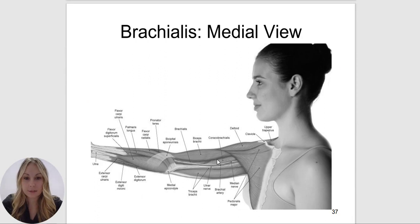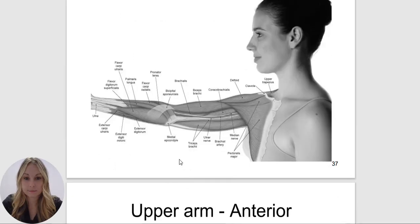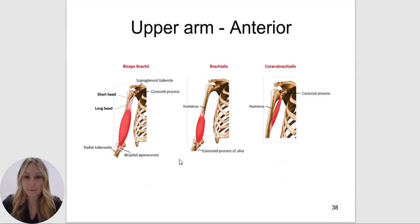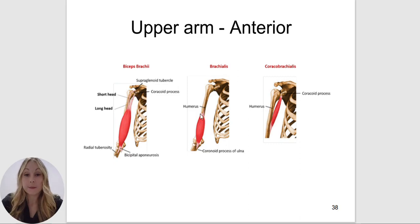The brachialis in this photo is deep to the biceps brachii. Going from left to right: the biceps brachii attaches to the supraglenoid tubercle and the coracoid process. The brachialis attaches distally to the humerus. And the coracobrachialis attaches from the coracoid process to the middle of the humerus.